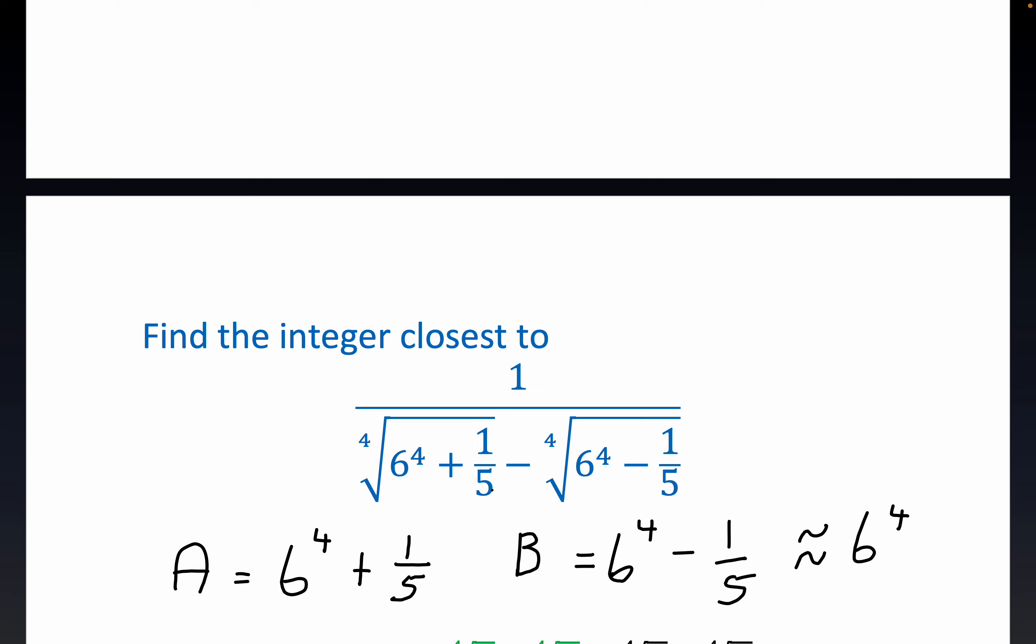And do notice that if the fifths weren't there, you'd be dividing by zero. So we're dividing through by a pretty small number so you'd anticipate a larger number.